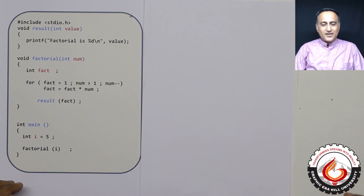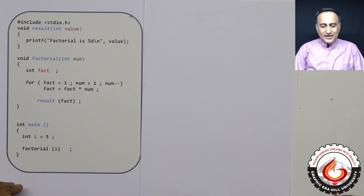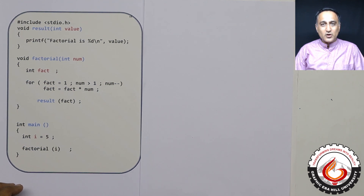In order to understand recursion, it is absolutely important to know how the function calling mechanism works in C programming language. How do I keep track of which functions are currently in main memory? After a function completes its execution, where should it come back? Where does the function keep local variables? Where are the parameters stored? All these questions have answers when you understand what is an activation record.